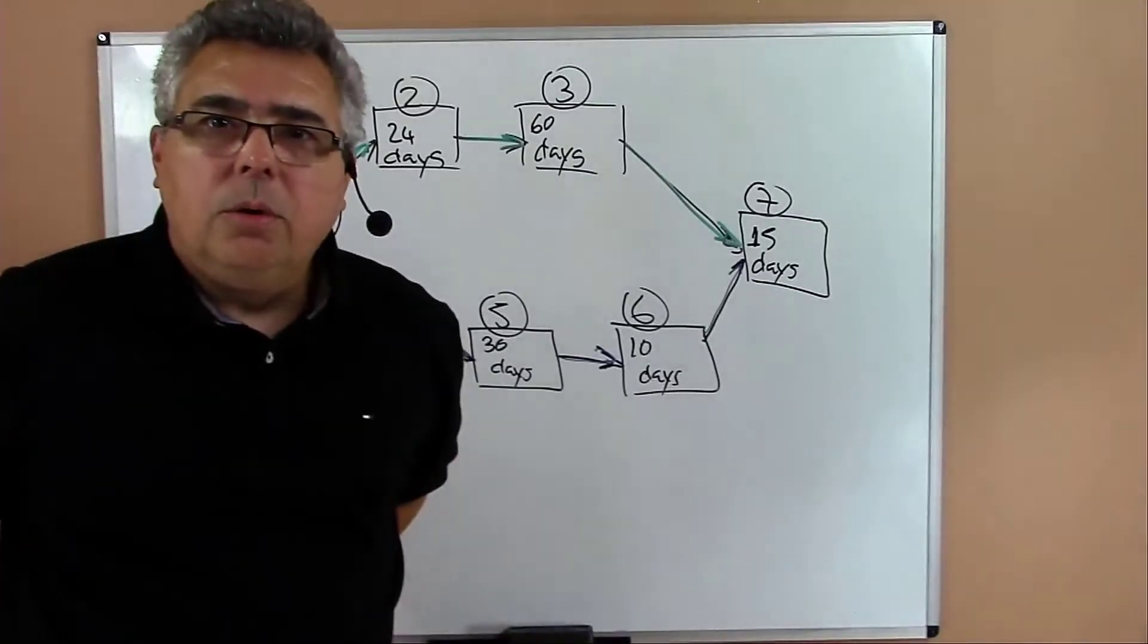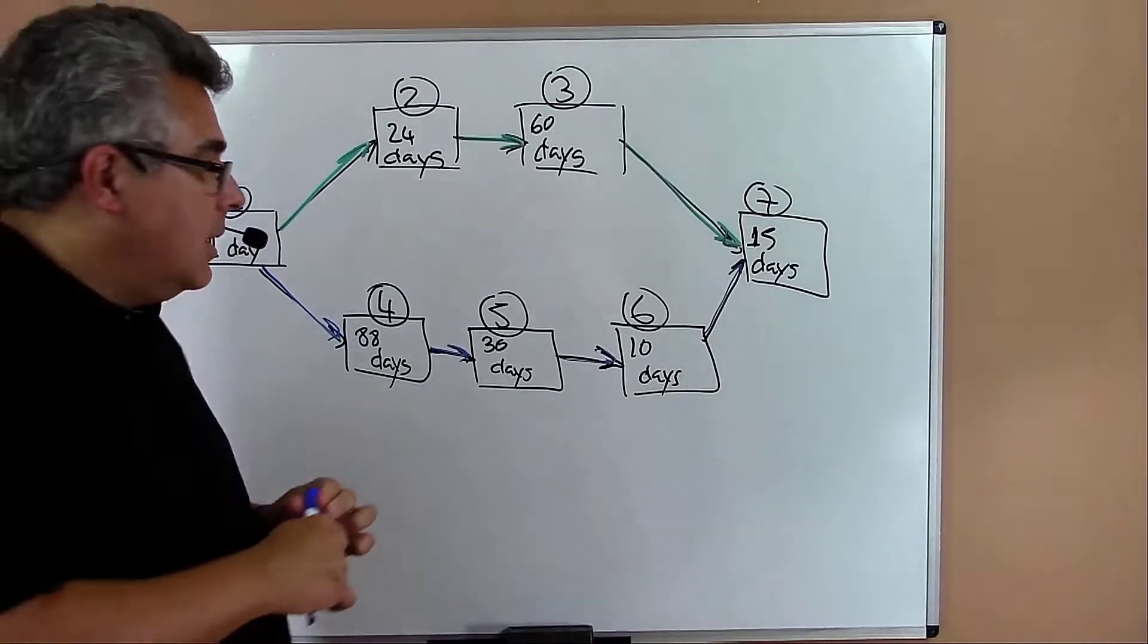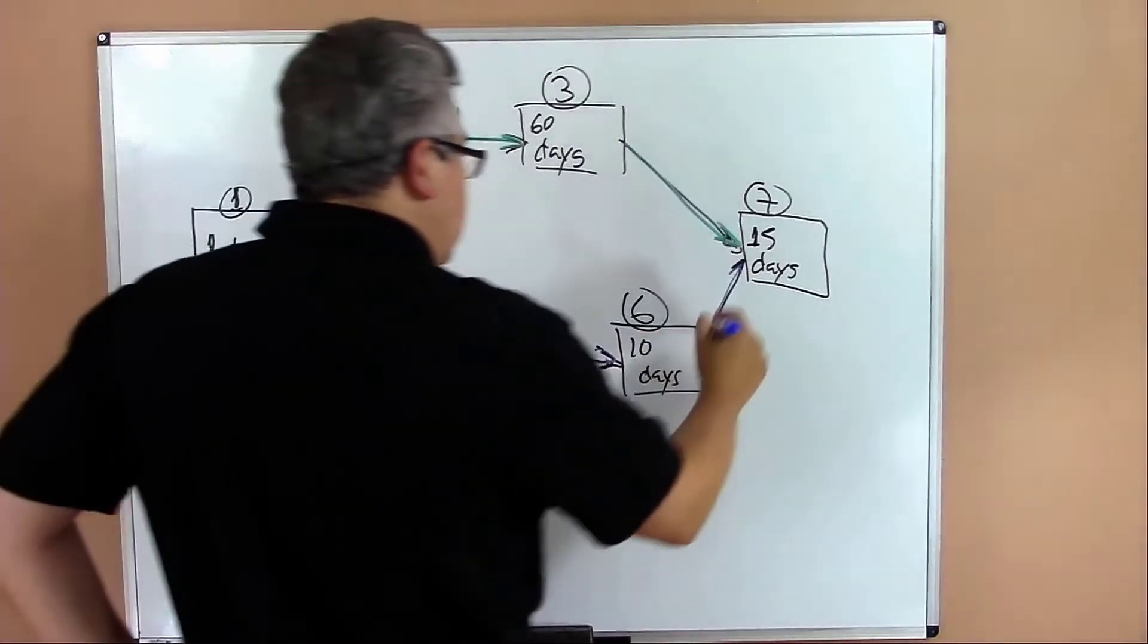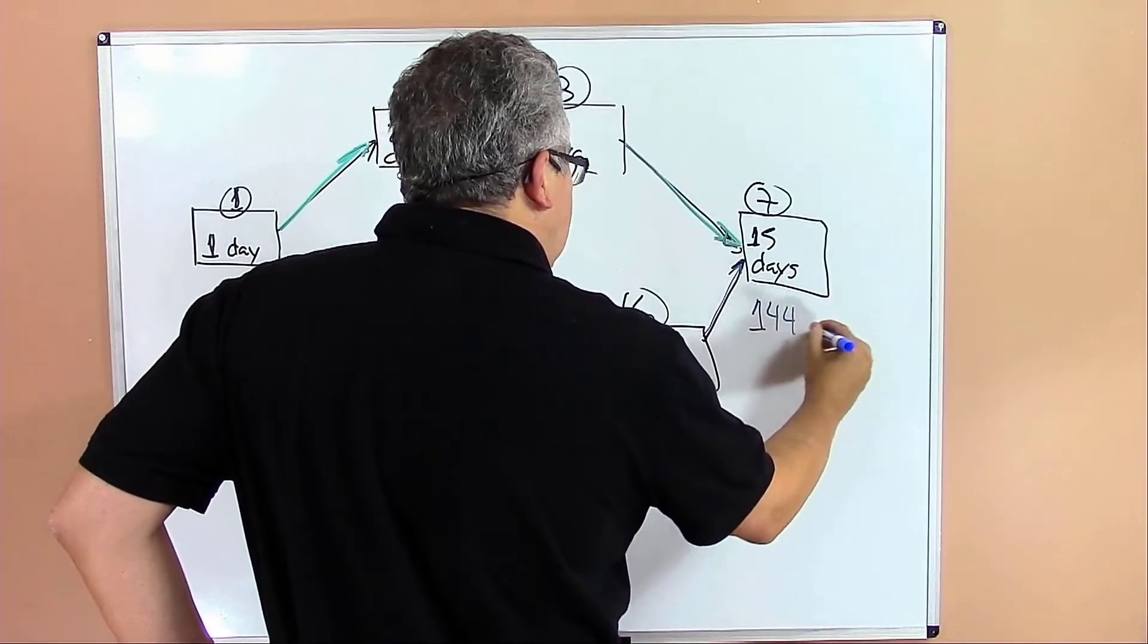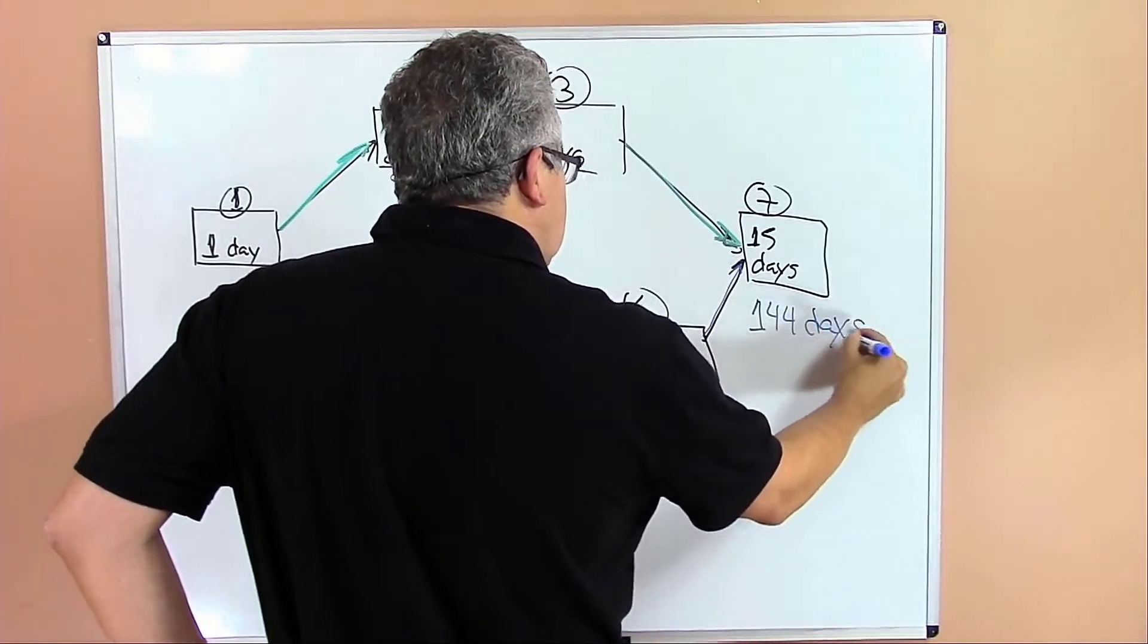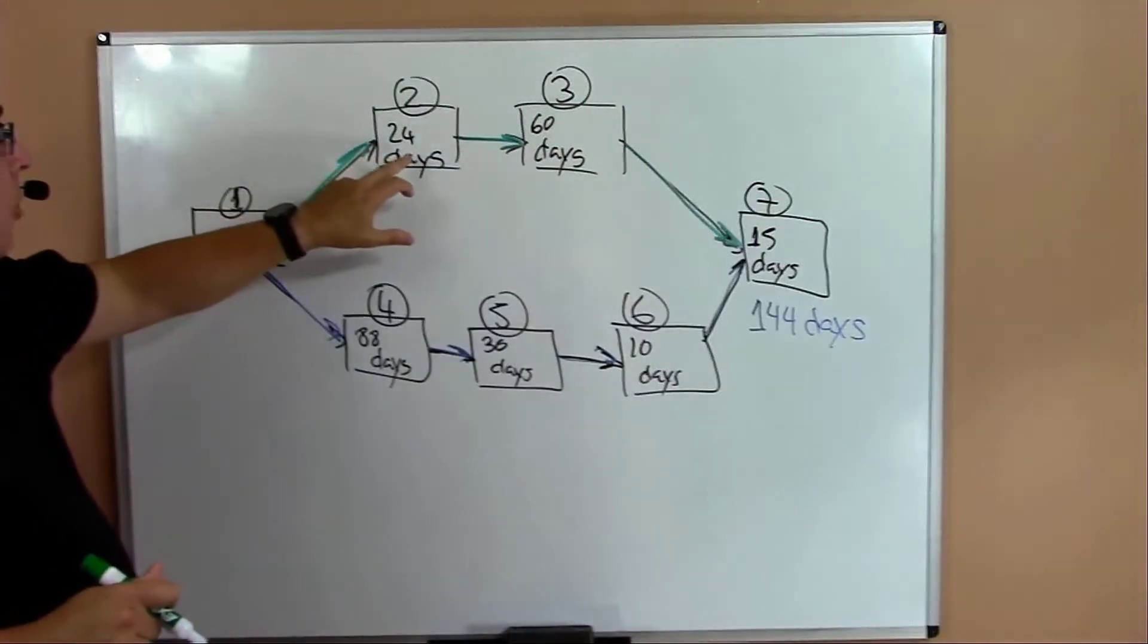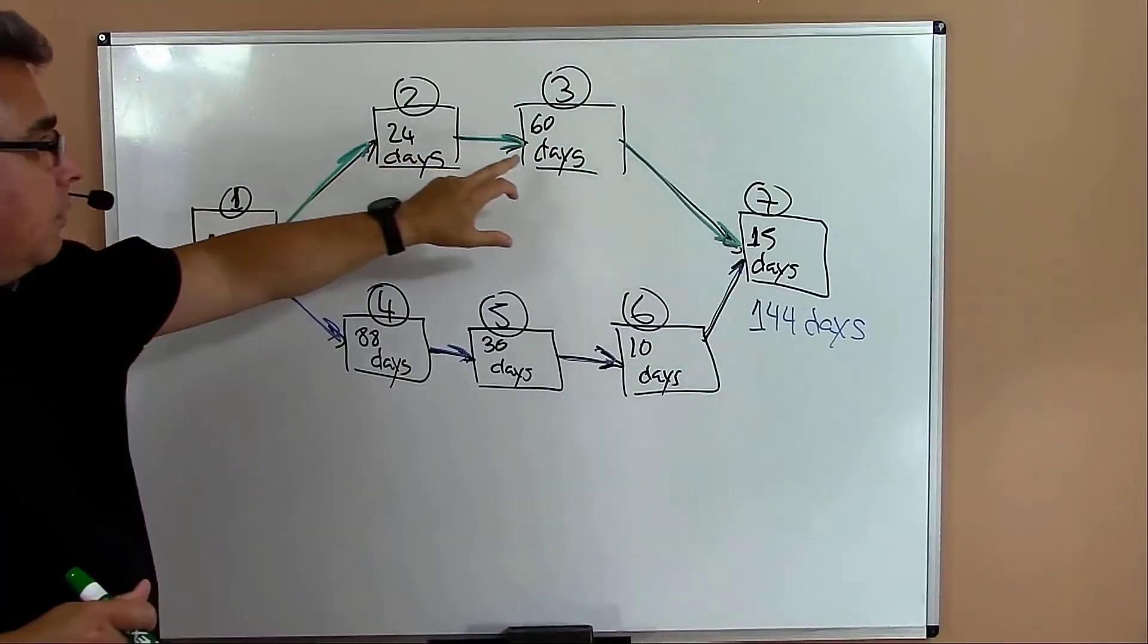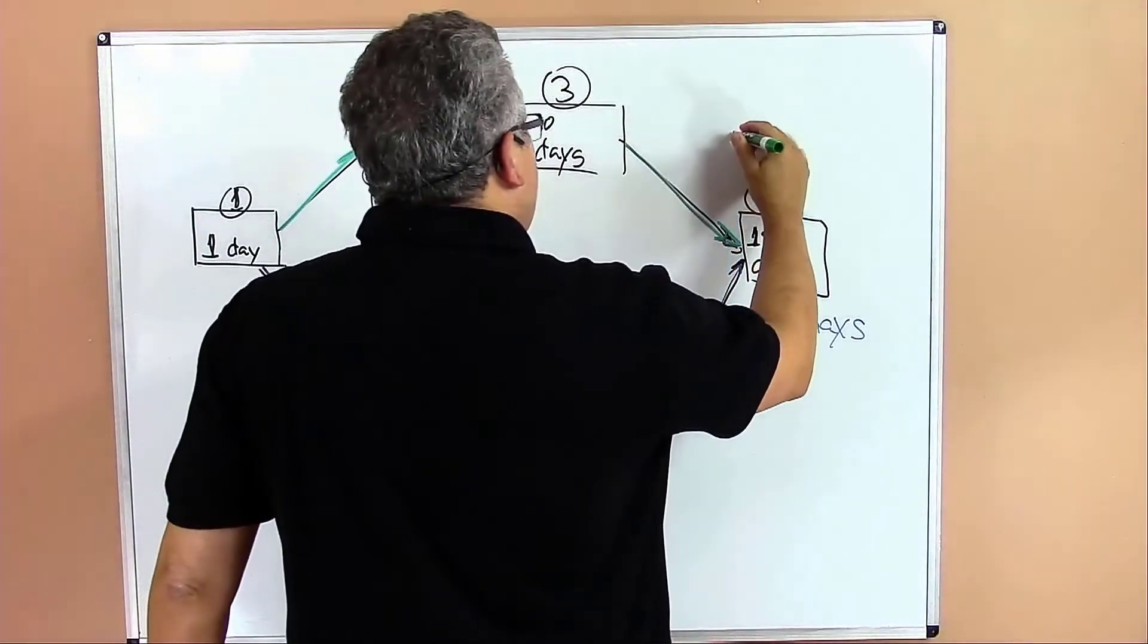One question for you: what's the duration of the project? 144, yes. So the blue path takes 144 days and the green path: 1 plus 24 is 25, plus 6 is 85, plus 15 is 100 days.